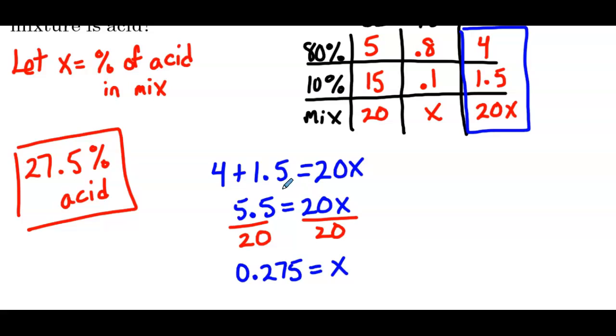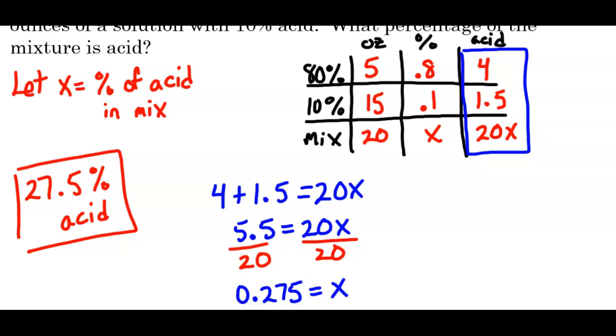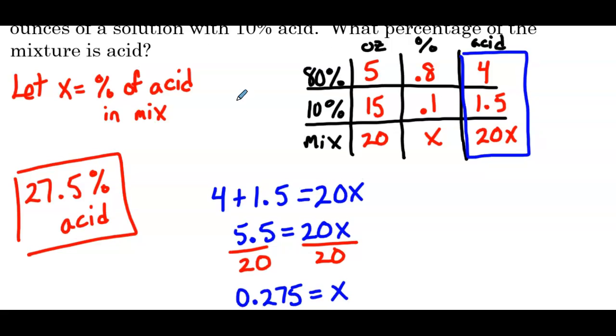Now, could we go directly to the equation? 100%, right? And your equation might even have looked like, I'll grab a different color, you might have just went directly to saying 5 times 0.8 plus 15 times 0.1 is equal to 20 times x. And that would simplify to this blue equation. So whether you use a table or you set up the equation directly, we wind up with the same answer. It's more a matter of what you're most comfortable with.